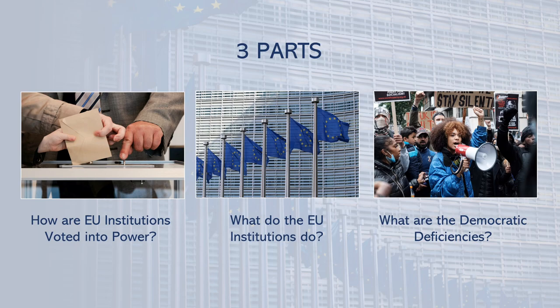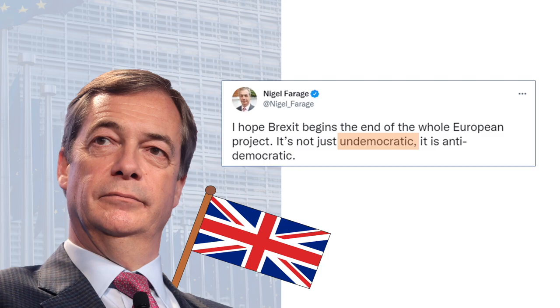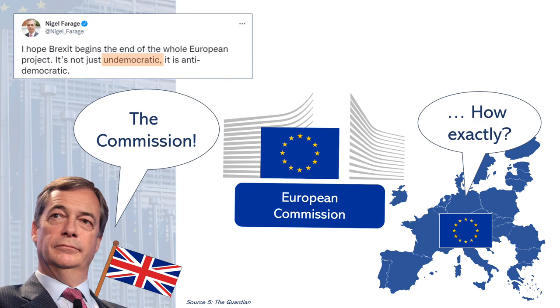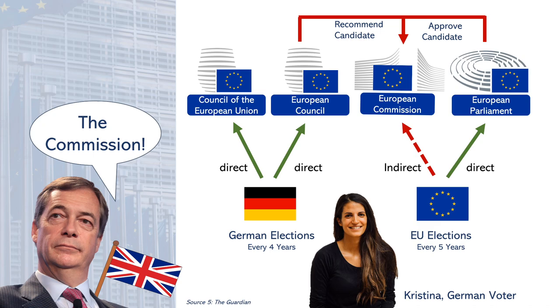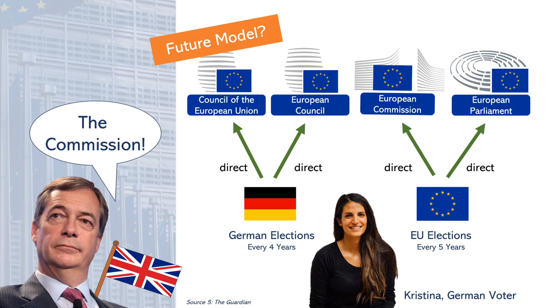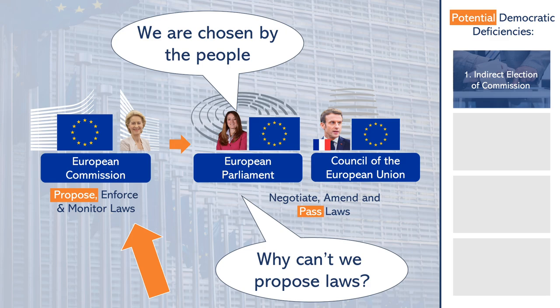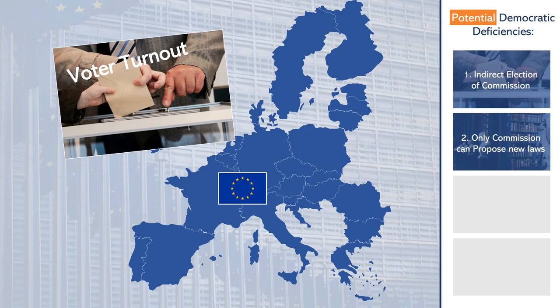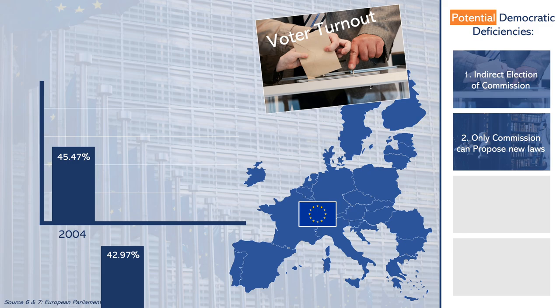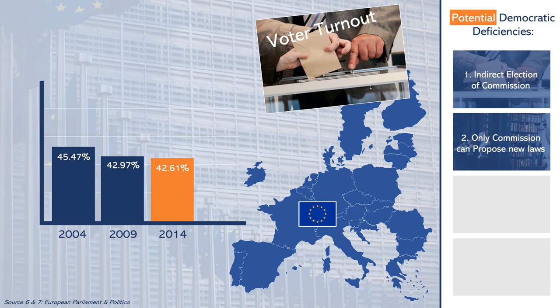Now to the third part of the video: what are the democratic deficiencies? When people talk about unelected EU bureaucrats, they normally point to the European Commission, as it is the only institution that citizens don't directly vote for. Some argue it would be more democratic if the President of the Commission were directly voted on by the people. Next, there's the issue that only the European Commission can initiate new laws — the Parliament and the Council may recommend legislation, but this is not legally binding for the Commission. Then there's the issue of low voter turnout, which some argue is weakening the EU Parliament's democratic legitimacy. In 2014 only 42% of Europeans voted, the lowest number ever, but this has since increased back to above 50% in 2019.